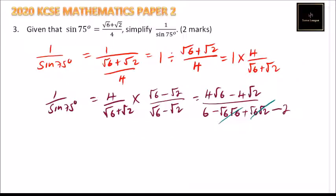And therefore, what we have now here is, in the numerator we can factorize 4, will be left with root 6 minus root 2, and the denominator will be 6 minus 2, it will be 4, which we can divide by 4, so this is going to give us the root of 6 minus the root of 2.